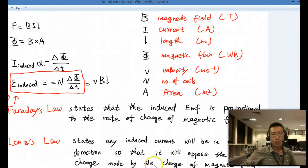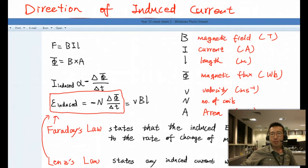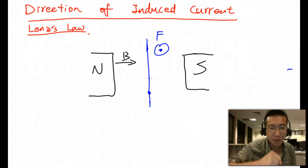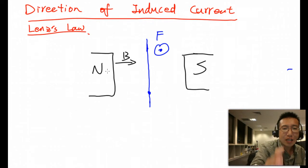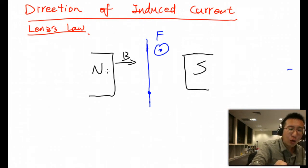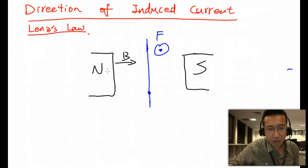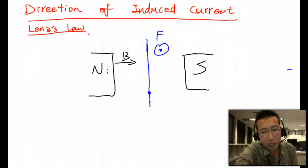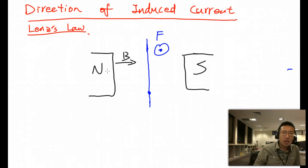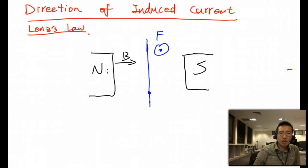Lenz's Law tells us that the induced current will be in the direction that opposes the change made by something else. Looking at the diagram, initially the wire is happily sitting between the magnets with no electricity generated. What we do is make it uncomfortable — we try to pull it out of the page. As a result, the wire wants to go back to its original position.